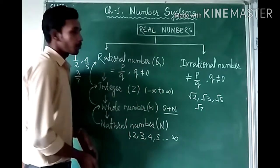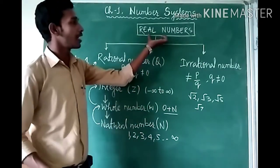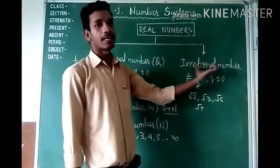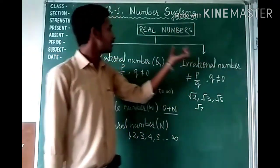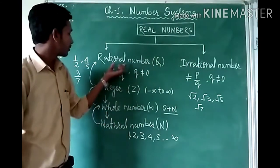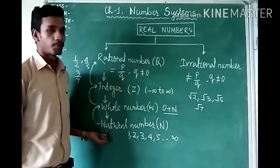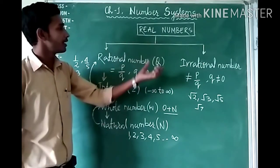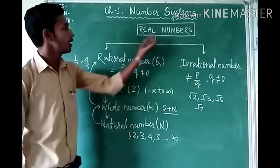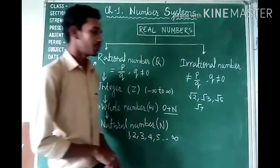Next, we will see from this flowchart that real numbers include both rational numbers and irrational numbers. Rational numbers further include integers, whole numbers, and natural numbers. From here we know the complete flowchart of real numbers.